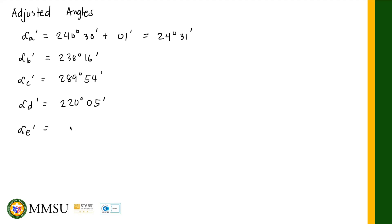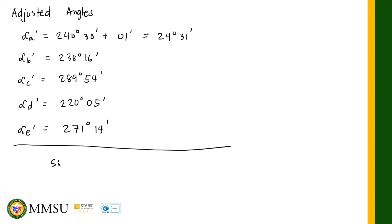Alpha E prime: 271 degrees 13 minutes plus 01 minute equals 271 degrees 14 minutes. We can verify by summing all the adjusted angles — the total should equal 1260 degrees, which matches the theoretical sum of (n+2) times 180 degrees, confirming that the adjusted angles are correct.